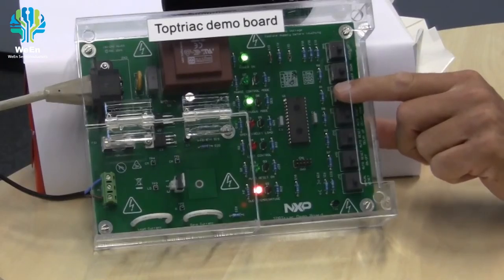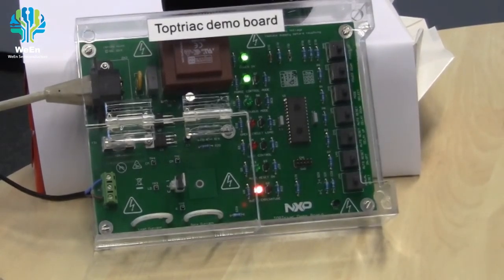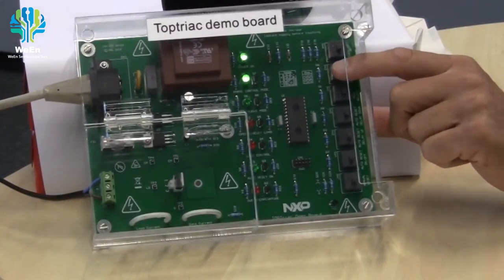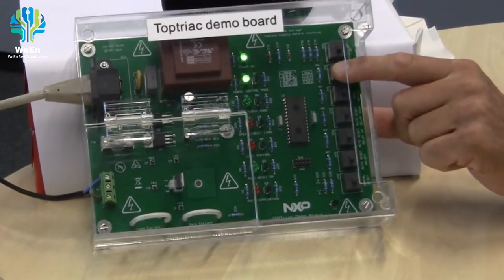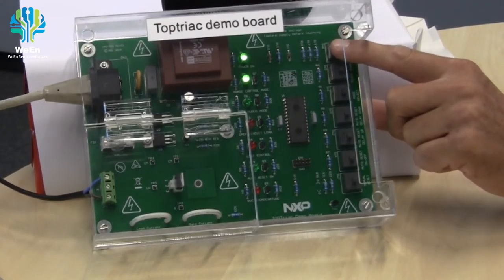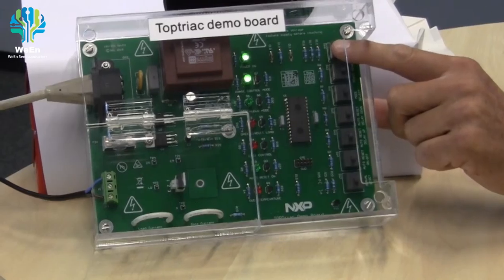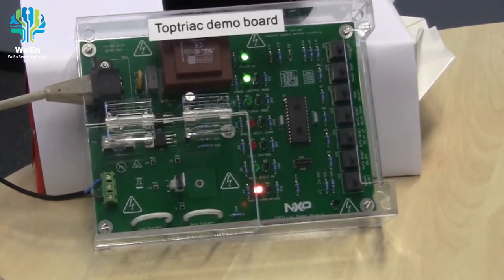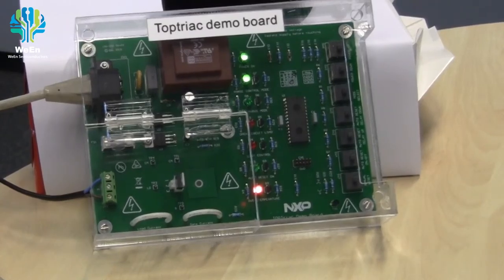Now I set the board to phase control operation and I start again. And you can hear I can lower the power and increase the power of the hairdryer. I set it to maximum power. And the TOP TRIAC trips again protecting itself.